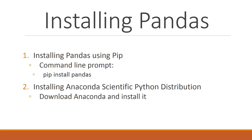That was it — now you know how to install pandas in Python. We first learned how to install pandas using pip: load up the command line prompt and type in 'pip install pandas'. Then we learned how to install the Anaconda scientific Python distribution to get pandas among other useful Python packages — just download Anaconda and install it.